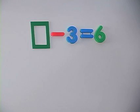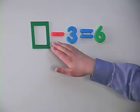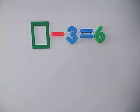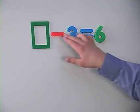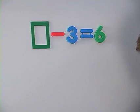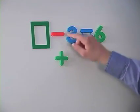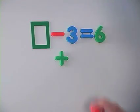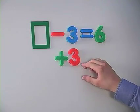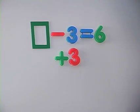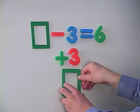But what if you have a subtraction problem? Blank minus 3 is equal to 6. Well you solve it pretty much the same way. You need to add 3 to both sides this time. So you have minus 3 plus 3. And that is 0. So pretty much on this side of the equation, again, all you have is the box.